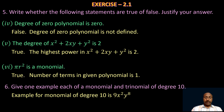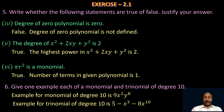An example of a trinomial of degree 10 is 5 − x³ − 8x¹⁰. This example has three terms, so it is a trinomial. The degree of the first term is 0, the degree of the second term is 3, and the degree of the third term is 10. The highest degree is 10, so it is a polynomial of degree 10, and since it contains three terms, it is a trinomial of degree 10.